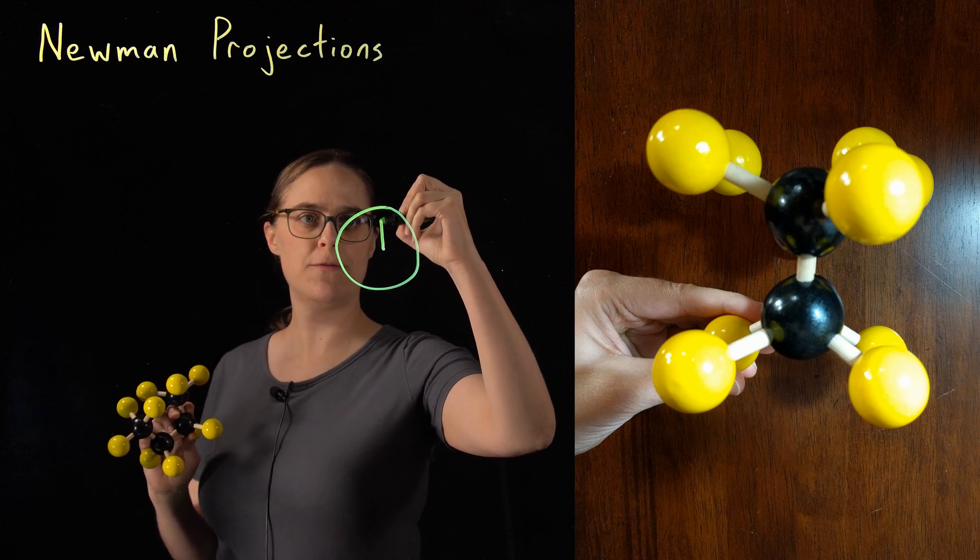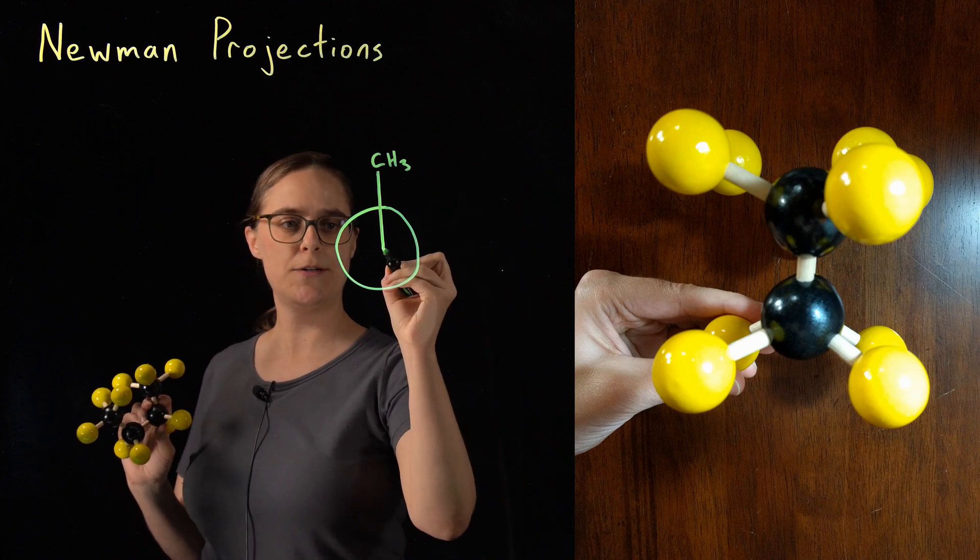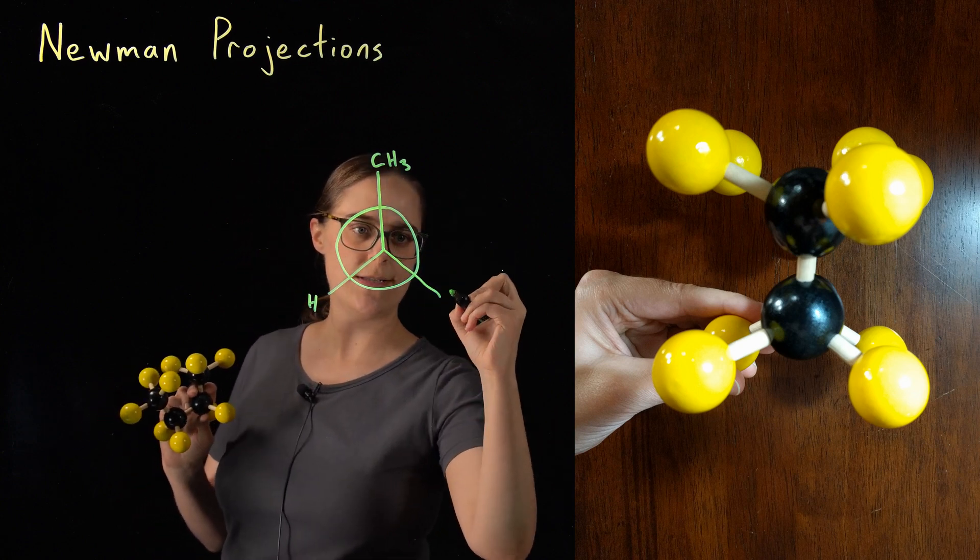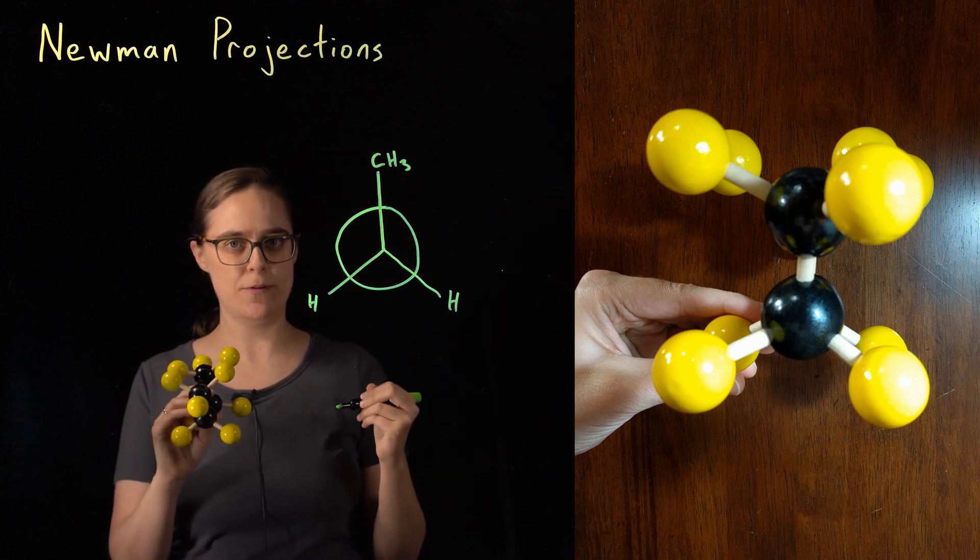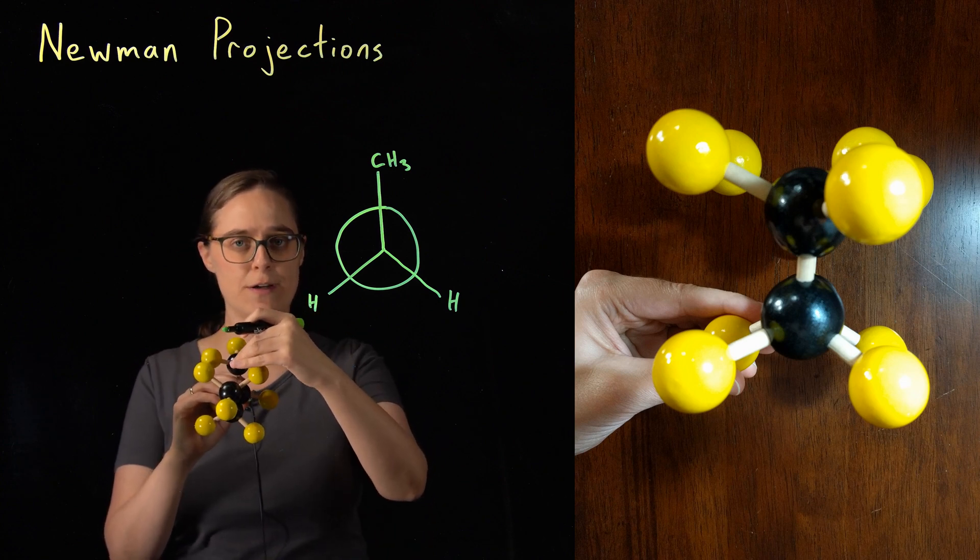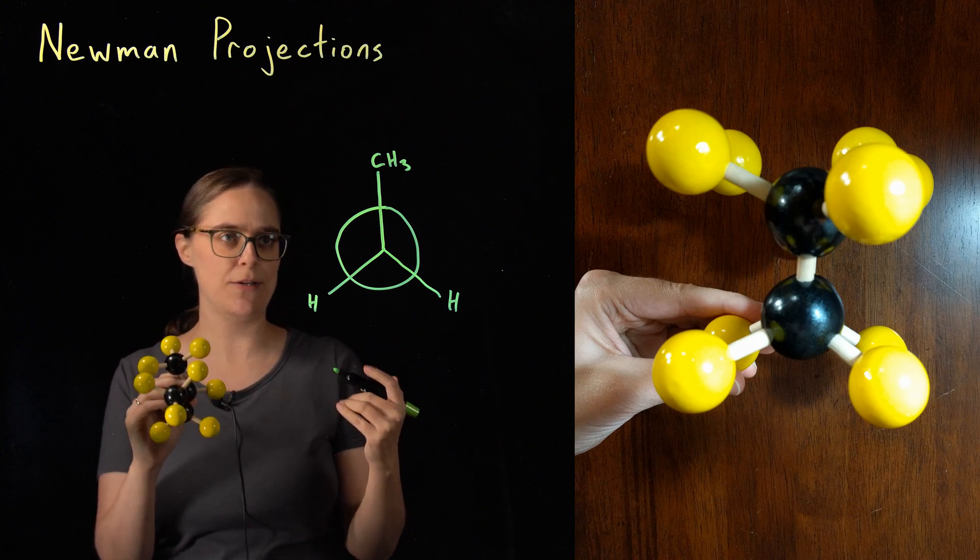The carbon in the front has a methyl group, meaning a CH3 group pointing up, and it has two hydrogens. One is down to the left, one is down and to the right. Now this is an eclipsed conformation. Eclipsed means the groups on the back carbon and the groups on the front carbon are in each other's way. They're as close as they can be to each other.